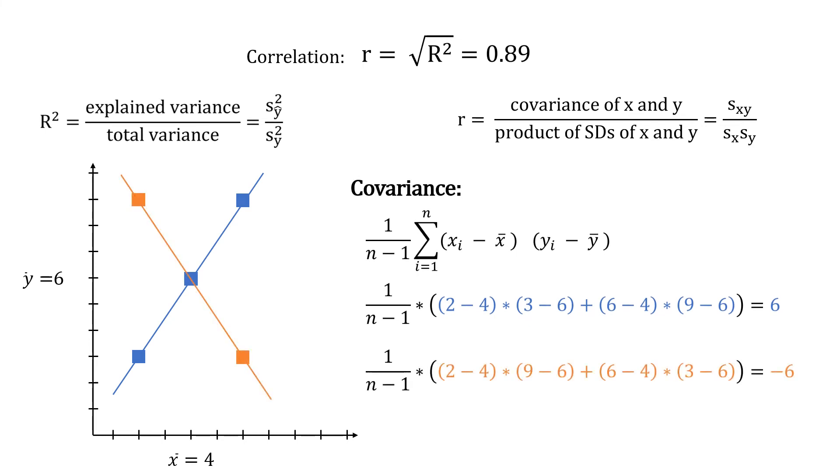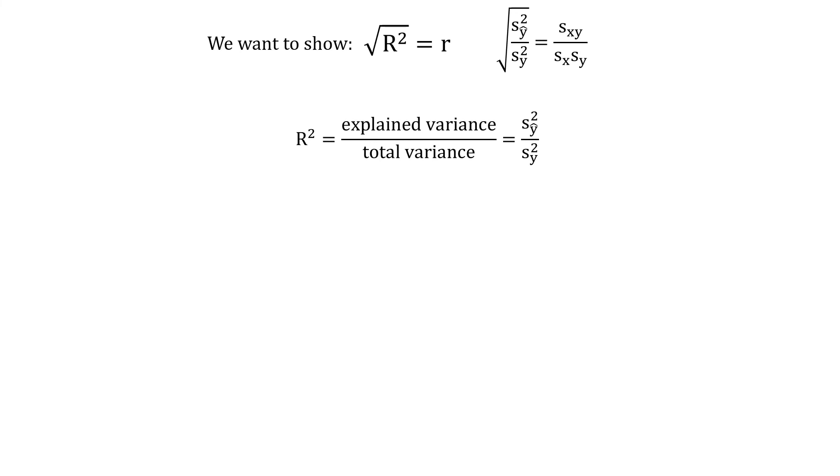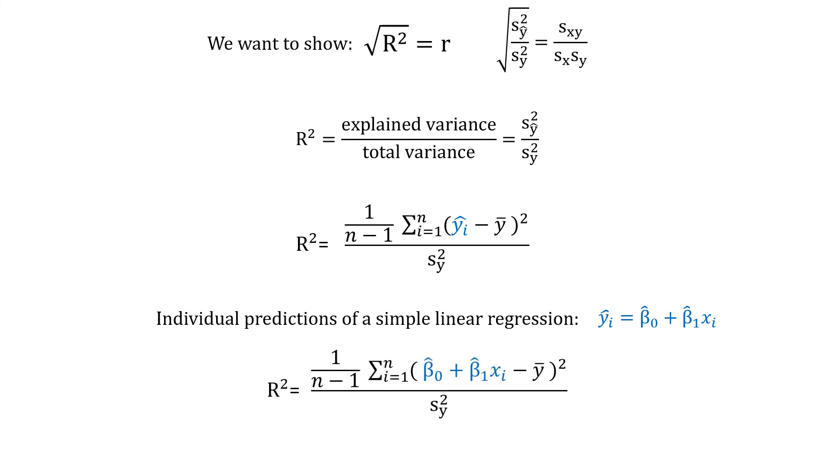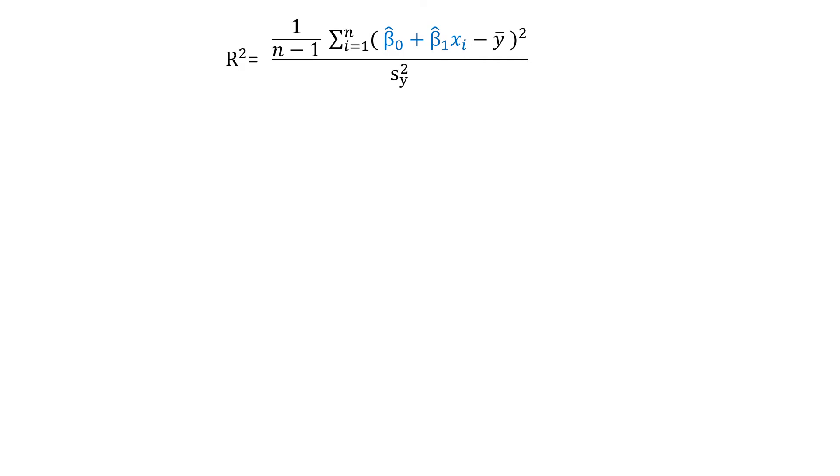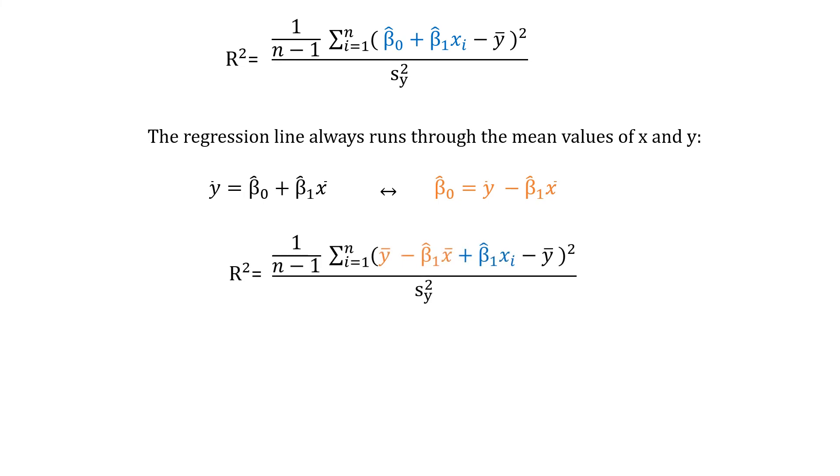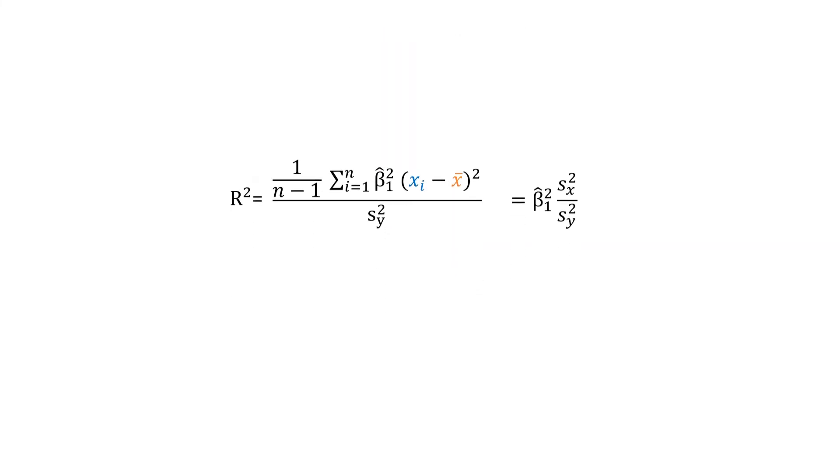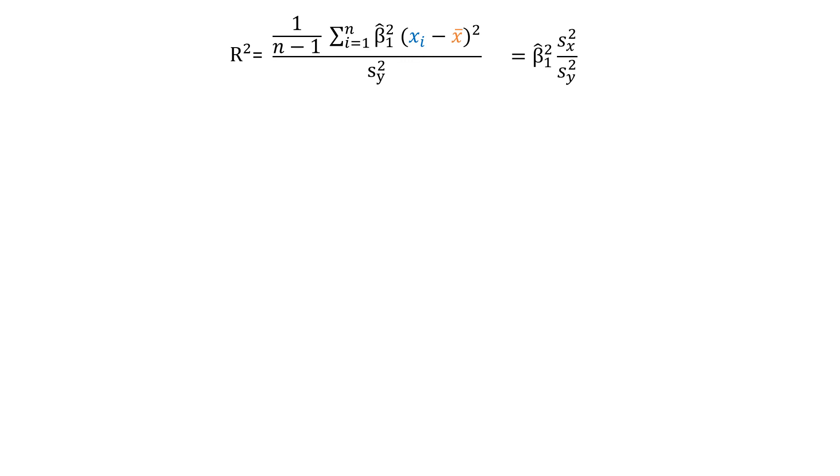Now we can come back to our proof. We start by replacing the symbol for explained variance by its formula, which you already know from the example earlier. We could do the same for the total variance in the denominator, but we won't touch it for the proof, so let's not do it to keep it as simple as possible. The individual prediction for each data point yi hat is given by the regression line. So we can replace yi hat in the formula by the standard formula for the regression line. Now you might know that the regression line always passes through a point that is given by the mean values of either variable x bar and y bar. This means you can express the intercept beta 0 hat in terms of these means and beta 1 hat. When you rearrange the terms, you will see that the numerator changed to the product of the slope of the regression beta 1 hat, squared, and the variance of the predictor.